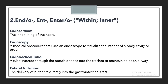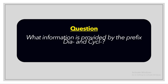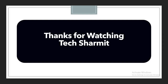Today we covered ECTO, EXO, ENDO, ENT, ENTRO, and EPI — very useful prefixes. Please keep a note of these so you can refer to them when preparing for any interview or exam, as we are covering only the most frequently used prefixes in medical coding or medical science. The question for today is: what information is provided by the prefix DIA and CYCL? We covered this in our previous session, so please put your answer in the comments. Thank you for watching.